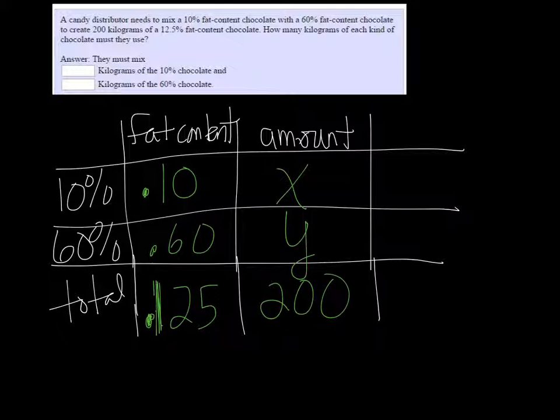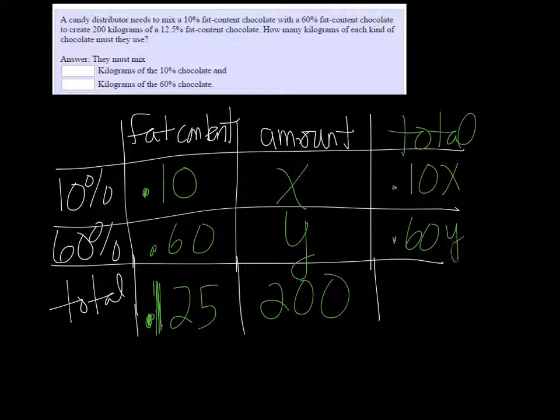If I multiply the fat content by the amount that I have, then I can figure out the total amount of that 10% chocolate that we have. So we have another total column here: 0.10x, 0.60y, and then I know that my total amount is 200, so 0.125 times 200 is 25.